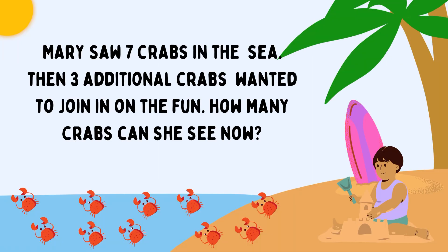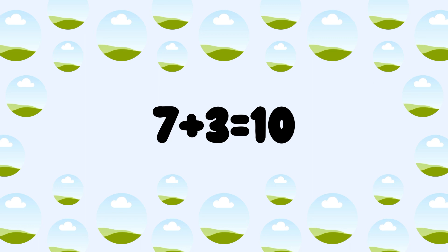Next one. Mary saw 7 crabs in the sea. Then 3 additional crabs wanted to join in on the fun. How many crabs can she see now? Let's check. 7 crabs plus another 3 crabs. 7 plus 3 is equal to 10. Total 10 crabs having fun.